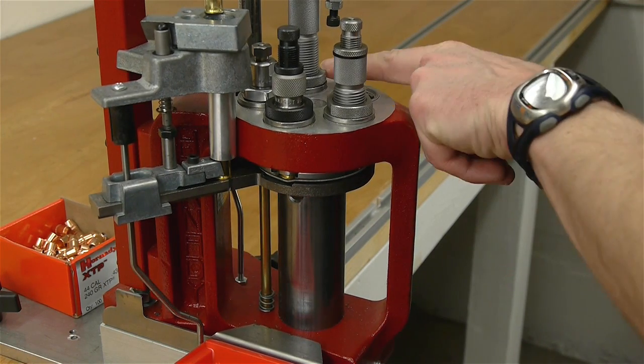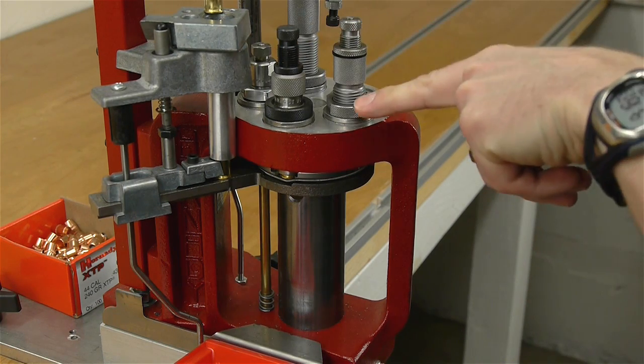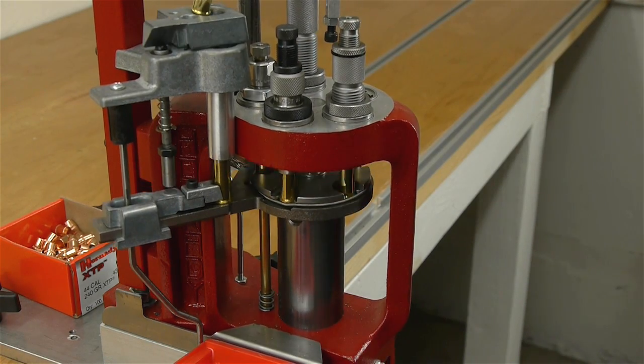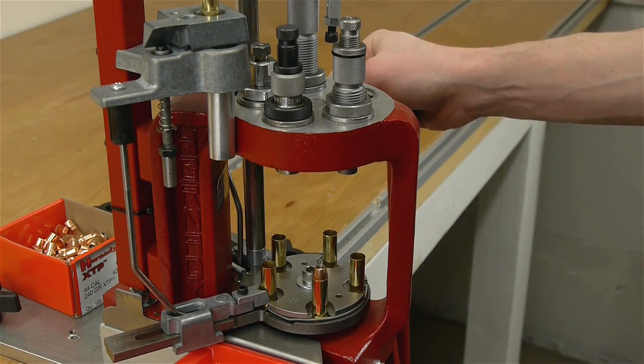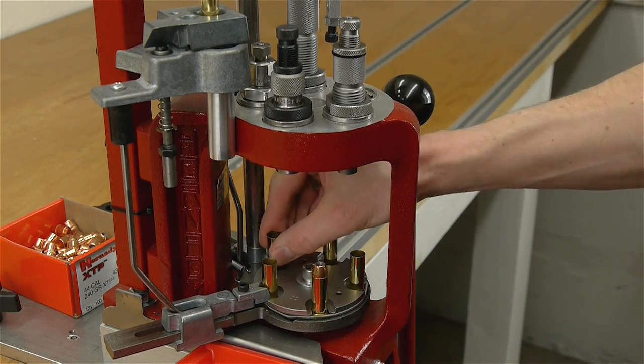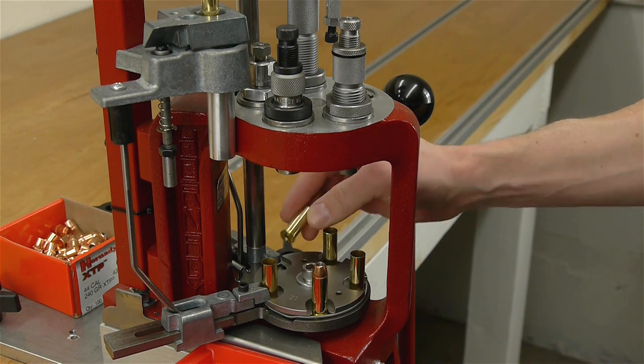So we've got powder that's flowed down here, we've got sizing and depriming, the old primer is knocked out. We've got seating and crimping. And on the way down we're going to prime. So if we take a look at that case in station number two on the bottom we've got a brand new primer there.